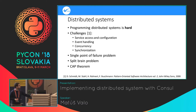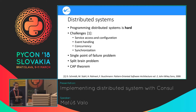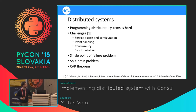Another problem, mainly from high-availability clusters, is the split-brain problem. If you have two nodes and a service that must run only on one node, with the other as a passive node, and the nodes are split by a network problem, you can easily end up with two parallel services running. This is a very difficult problem to solve.